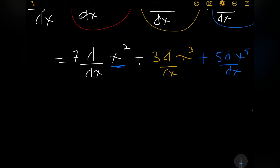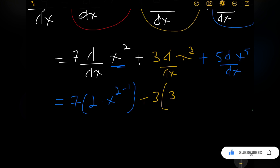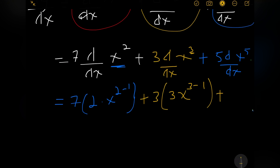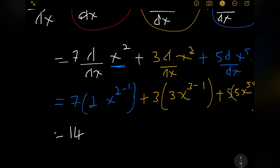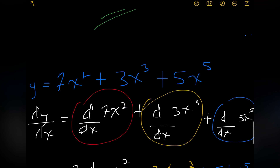Using the power rule, for the first term we take down the 2, giving 7 times 2 times x to the 2 minus 1, which is 14x. For the second term, we take down the 3, giving 3 times 3 times x to the 3 minus 1, which is 9x squared. For the final term, we take down the 5, giving 5 times 5 times x to the 5 minus 1, which is 25x to the fourth. So the derivative is 14x plus 9x squared plus 25x to the fourth.